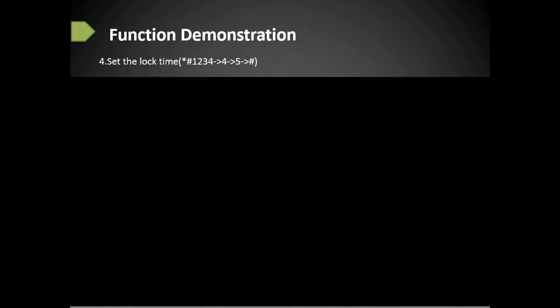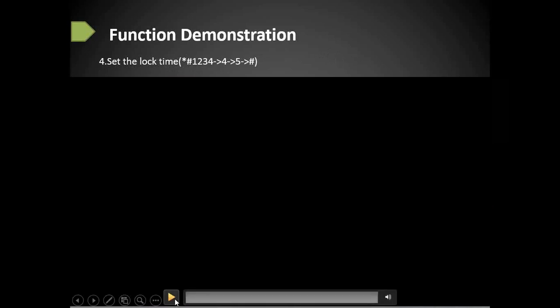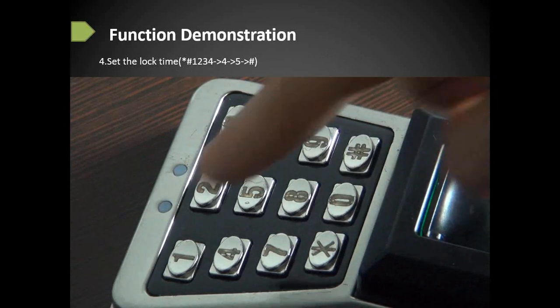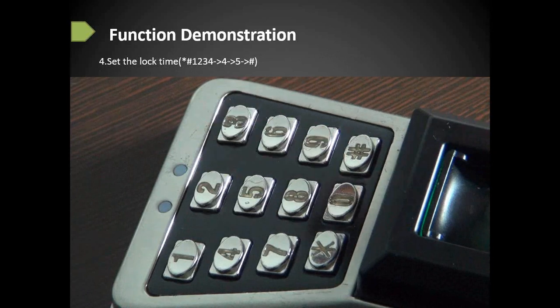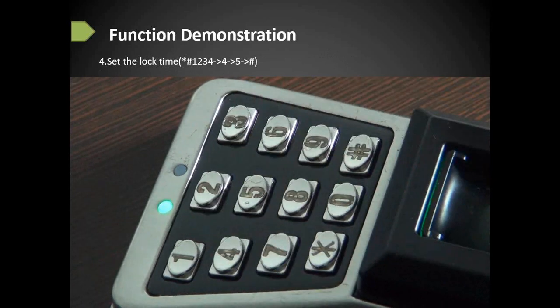This step sets the lock open time — how long the lock stays open after a successful verification by password, fingerprint, or card. Enter administrator mode with star key, pound key, one, two, three, four. Then press four and input the desired duration in seconds — you can input any number from one to ten, with ten being the maximum.